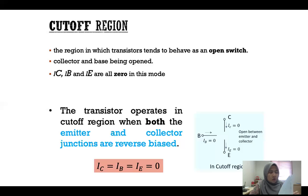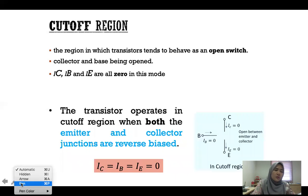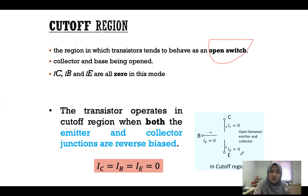The cutoff region — also called the breakdown region — is the region at the end of the VI graph for a transistor. The cutoff region is the region in which the transistor tends to behave as an open switch, different from the saturation region where it behaves as a closed switch. When the transistor becomes an open switch, the collector and base are open, so no current can flow: IC equals zero, IB equals zero, and IE equals zero.